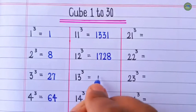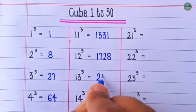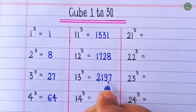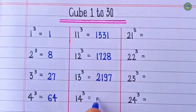Cube of 13 is 2,197. Cube of 14 is 2,744.